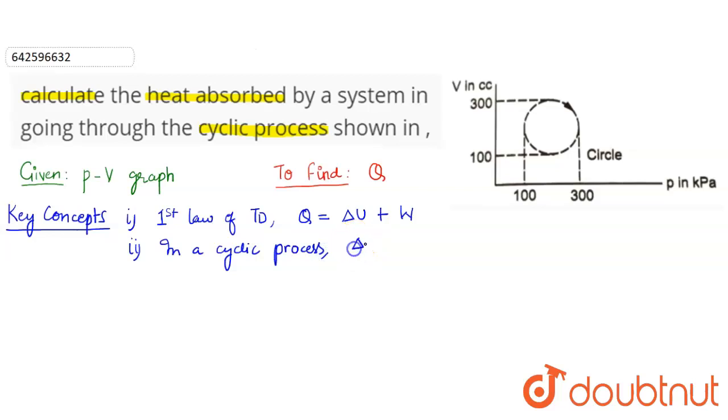the change in internal energy of the system is zero. Because internal energy only depends on the initial and final position, and in a cyclic process initial and final positions are same, so the change of internal energy would be zero. All right, so the third concept